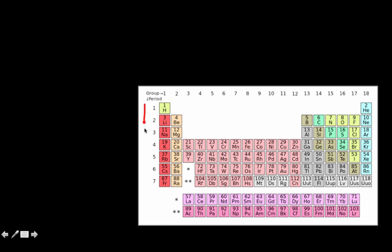The periods go this way, 1 through 7, and the groups go this way, 1 through 18. And that can help you tell, first of all, how many energy levels there are, and then how many electrons are in each energy level.